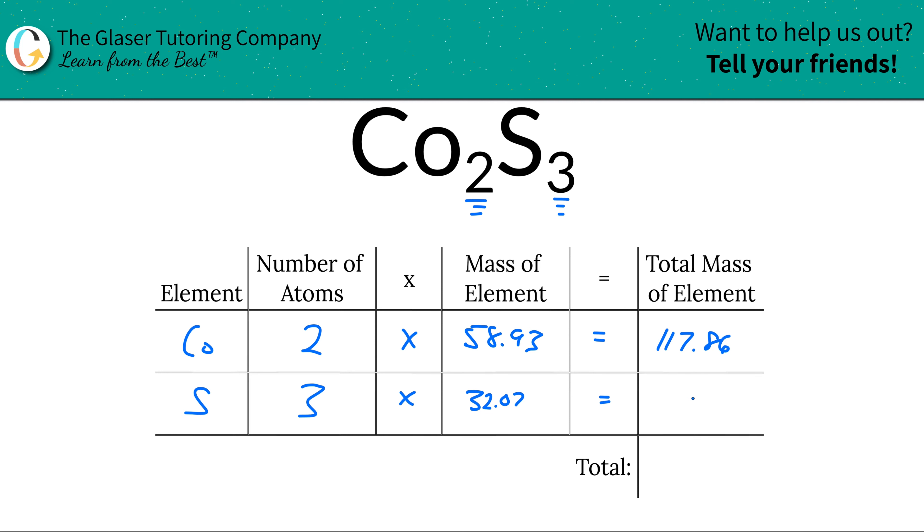The total mass of sulfur is going to be about 96.21 units of mass. And to find the mass of the entire compound, all you got to do is add the column together.